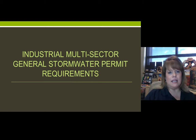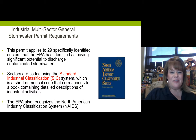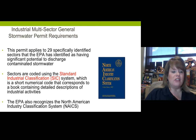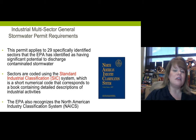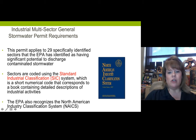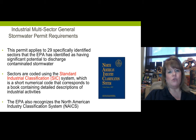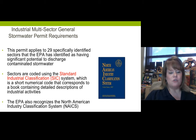Let's move into the industrial multi-sector general stormwater permit requirements. The industrial MSGP — multi-sector general permit — applies to 29 specifically identified sectors that EPA has selected as having significant potential to discharge pollution or contaminated stormwater. These sectors are coded using standard industrial classification codes, or SIC codes — a short numerical code corresponding to a book containing detailed descriptions of industrial activities. The North American Industrial Classification System, known as NAICS, is that book.